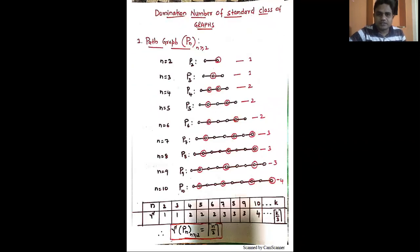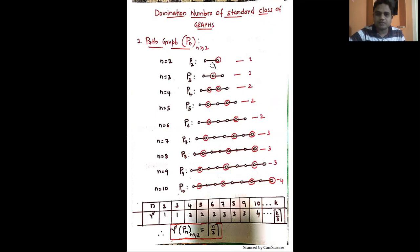Let us start with the path graph. Here path graph P_n has n vertices, where n is greater than or equal to 2. The smallest path is P2. For n equal to 2, only one vertex is required to cover the remaining vertices, therefore the domination number of P2 is 1. For n equal to 3, we need the central vertex, therefore the domination number of P3 is also 1.